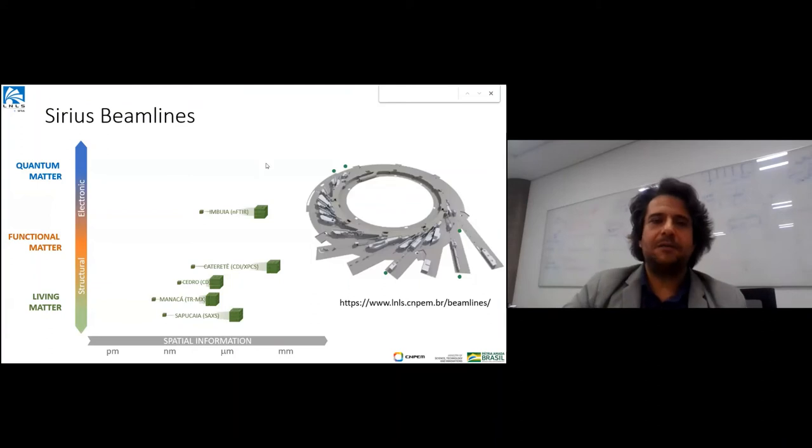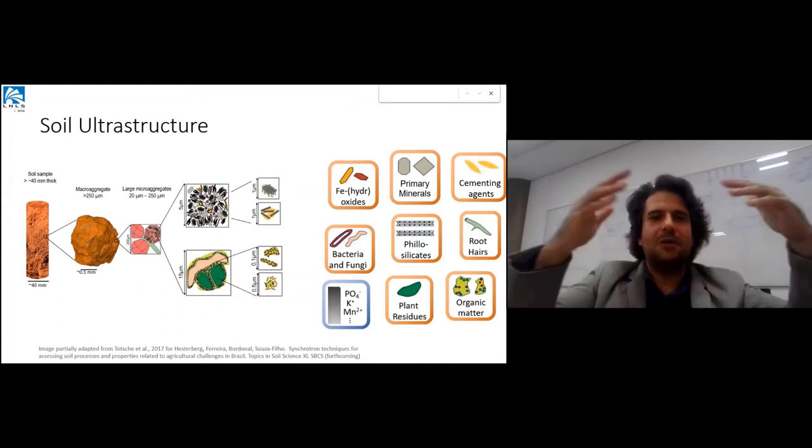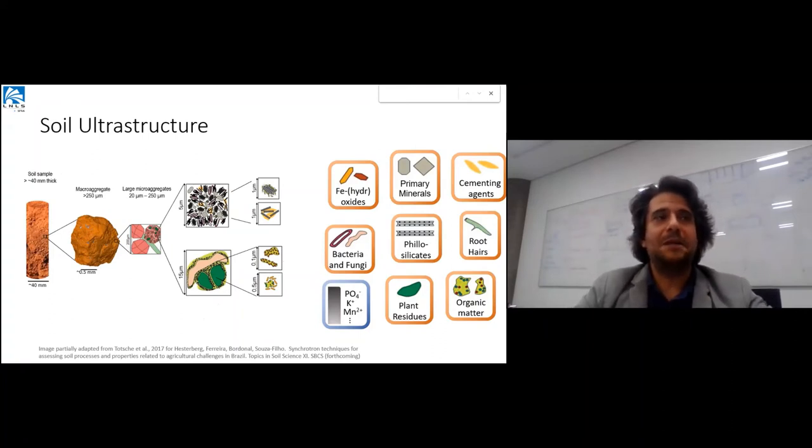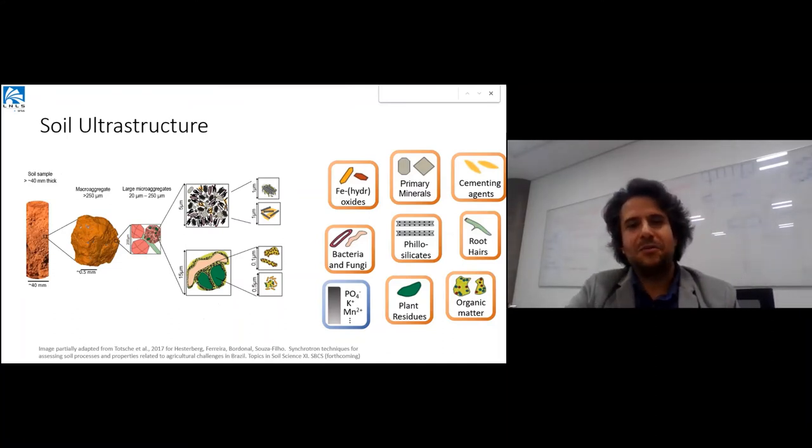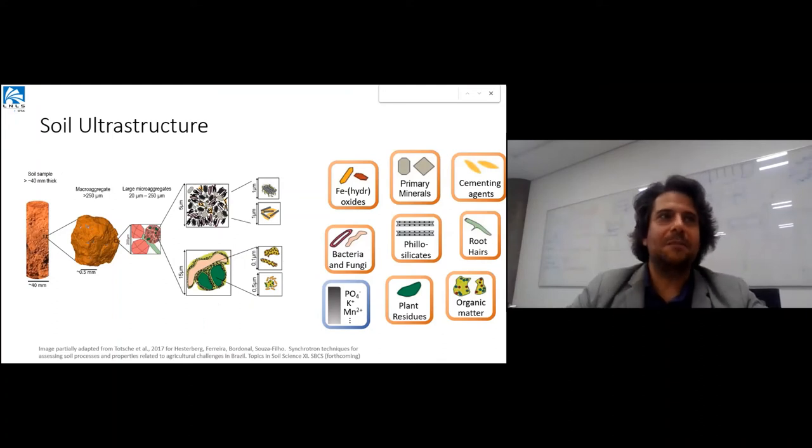Putting it all together, these beamlines for living matter understanding make a suite: nano-FTIR which is basically a SNOM technique, the Cateretê beamline for CDI and XPCS, and protein crystallography and SAXS. When we put together aspects of inorganic matter and living matter, we come to materials that behave completely differently because they're created by evolution. They're functional, like soil - probably my favorite example of how science will tackle our understanding of our current environment and help us go to our future without destroying the planet.